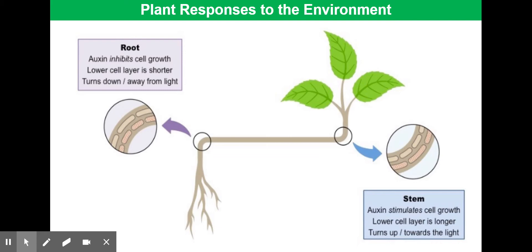In the stem, by contrast, auxin is responsible for stimulating cell growth. Again in that image you can see auxin represented as red dots, and the cells that contain auxin in the stem are elongating. Because those lower cells are elongating, they get longer and longer, which causes the stem to bend up towards light. This is why roots are negatively phototrophic and stems are positively phototrophic — because of auxin inhibiting cell growth in roots and stimulating it in stems.